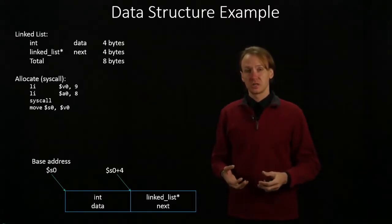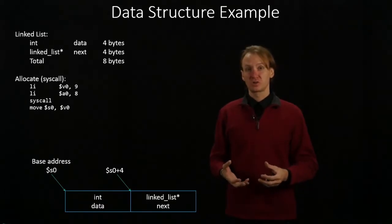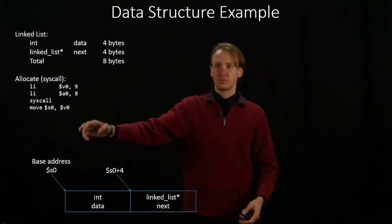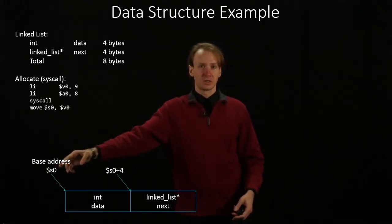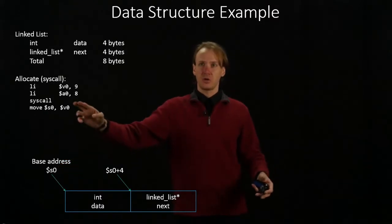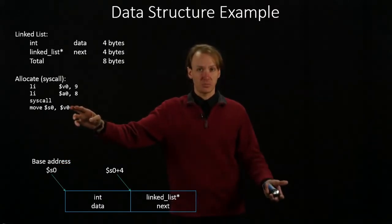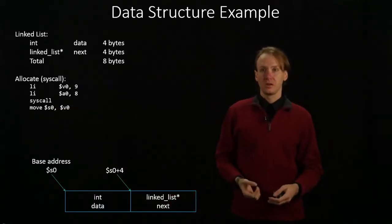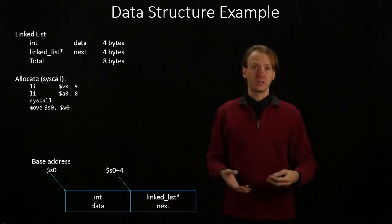When this returns, the operating system has put a pointer to eight bytes of memory into register V0. I want that to be in register S0, because I like S0. So I'm going to copy that pointer from V0 to S0. Now I have everything set up and I can use this.